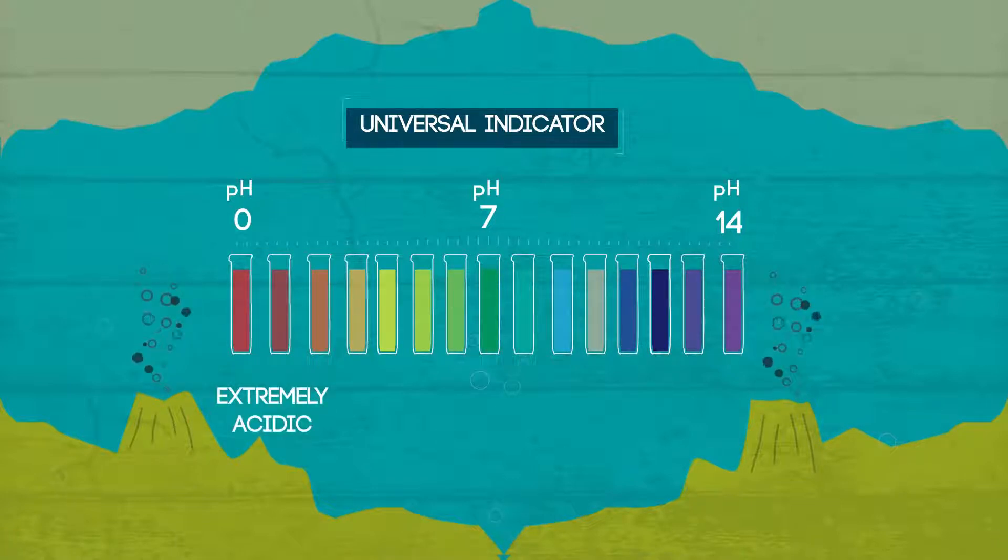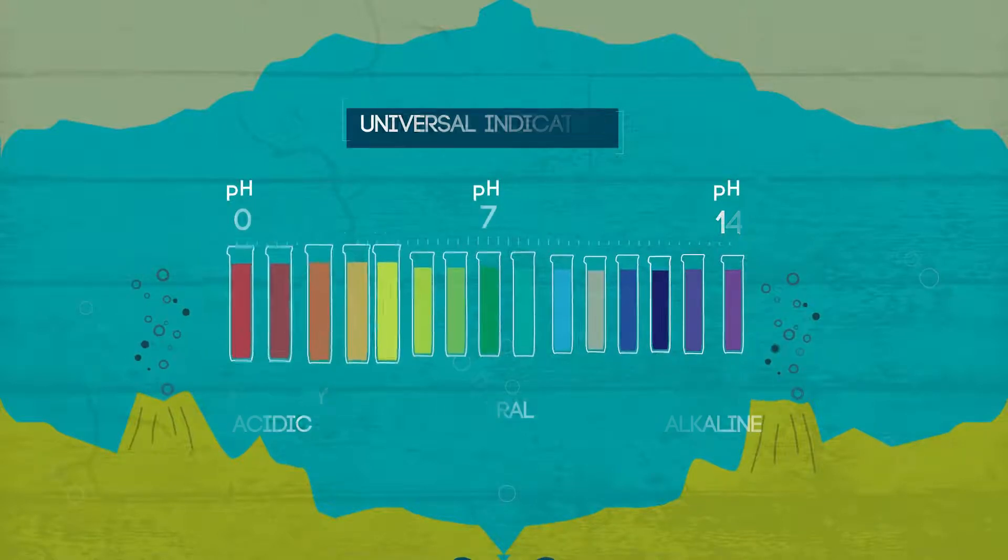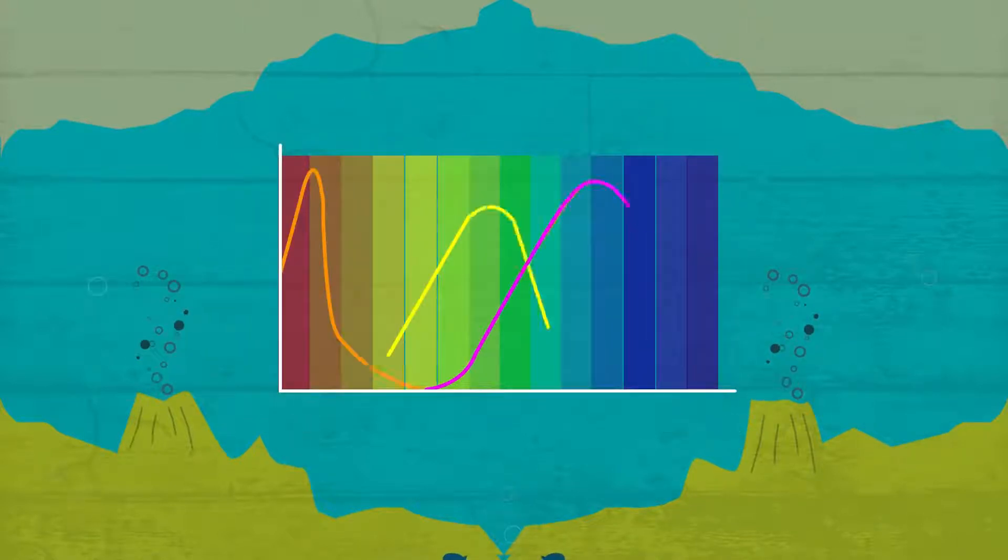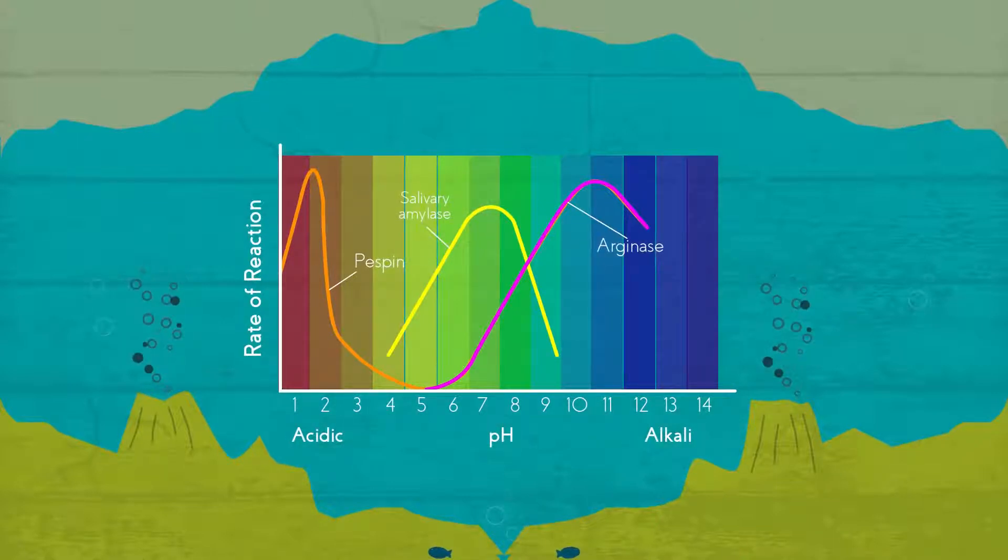The optimal pH for an enzyme depends upon where it normally works. Pepsin works in the acidic stomach and so unsurprisingly has an optimum pH of 2.